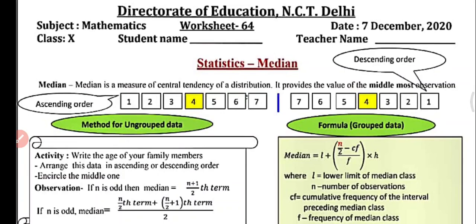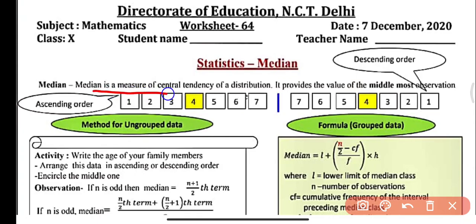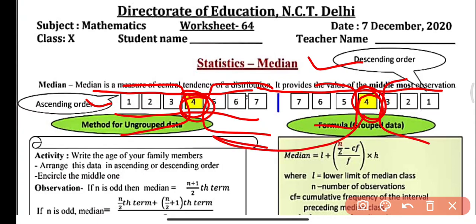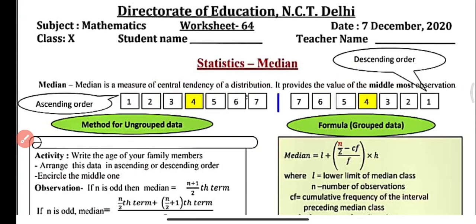Median is defined as the middlemost value or central value of the variables in a set of observations when the observations are arranged in ascending or descending order. It is a measure of central tendency. You can see on the screen 7 numbers in ascending order — the middlemost value is 4, and similarly in descending order the middlemost value is also 4. So the median is the same in both cases.